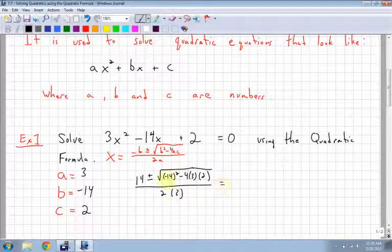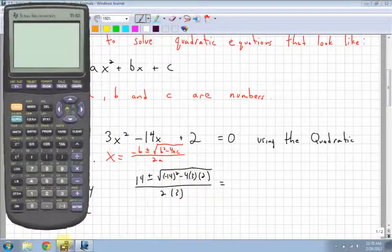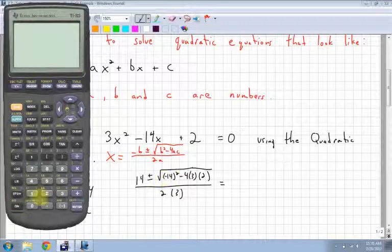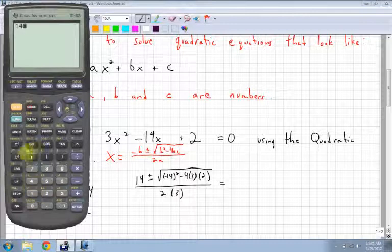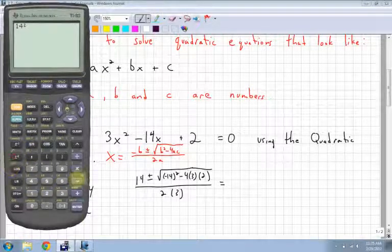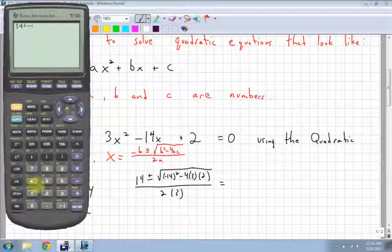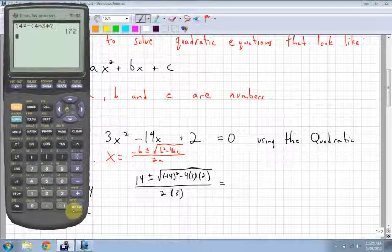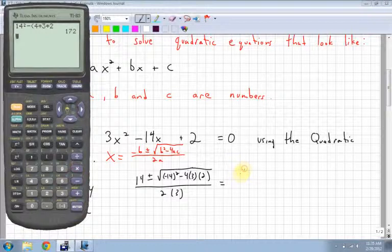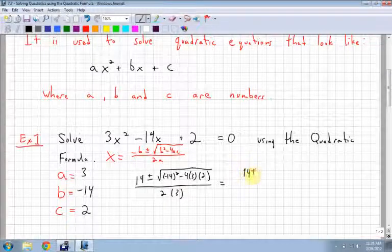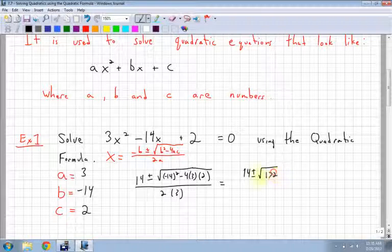Alright, so let's work this out here. I'm gonna work out the inside on my calculator. 14 squared minus 4 times 3 times 2 equals 172. So I get 14 plus or minus the square root of 172, all over 2 times 3 is 6.